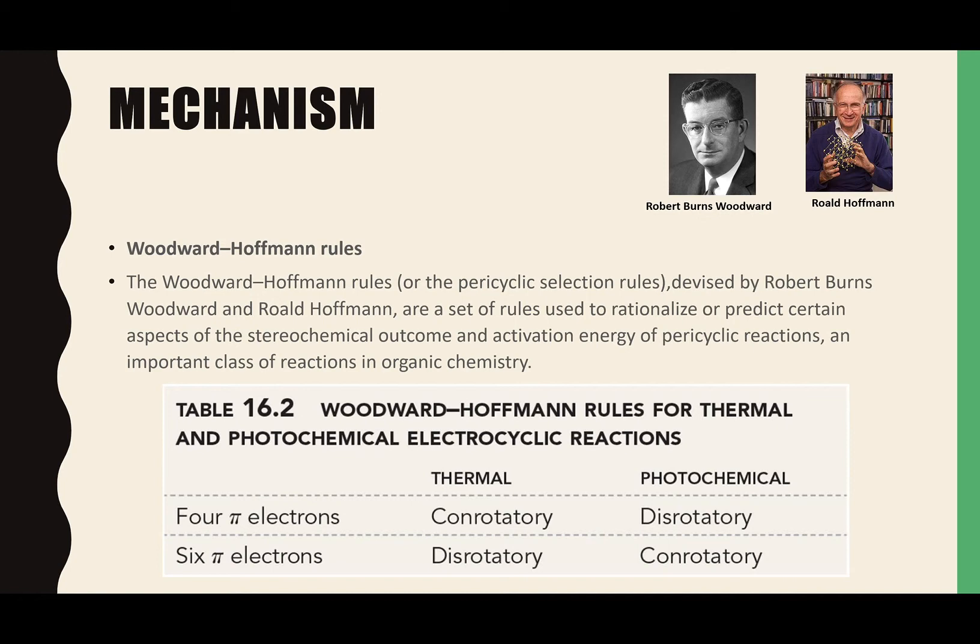Now I will introduce the Woodward-Hoffmann rules, also called pericyclic selection rules, introduced by Robert Burns Woodward and Roald Hoffmann. Robert Burns Woodward was awarded the Nobel Prize in Chemistry in 1965, and Roald Hoffmann won the Nobel Prize in Chemistry in 1981. These rules are used to rationalize or predict the stereochemical outcome and activation energy of pericyclic reactions, which are an important class of reactions in organic chemistry.